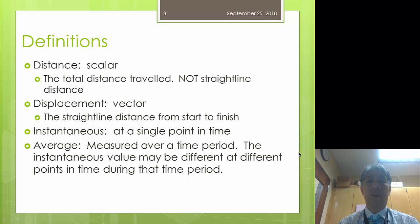First off, before we move on, I want to talk about various definitions. First off, we have distance, which is a scalar, and this is the total distance traveled, not straight line distance. For example, if you run around a 400 meter track one lap, you have got a total distance of 400 meters.